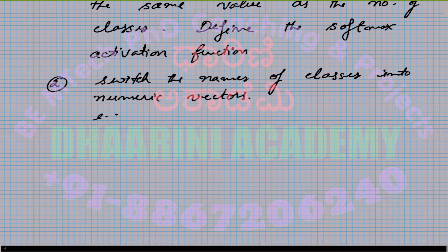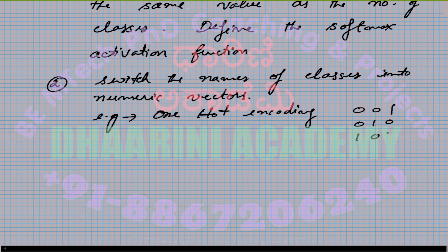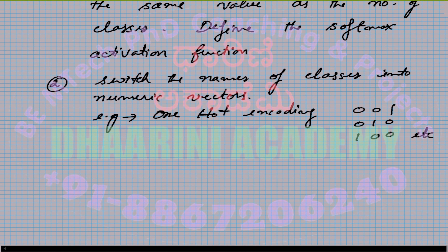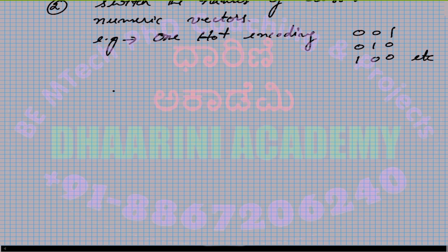Only one of the values is 1 and all other values are 0. This kind of representation is called one-hot encoding. For example: 0, 0, 1 or 0, 1, 0 or 1, 0, 0 and so on. The meaning of 'hot' in one-hot encoding is that only one of them will be 'hot' in the sense of being high.